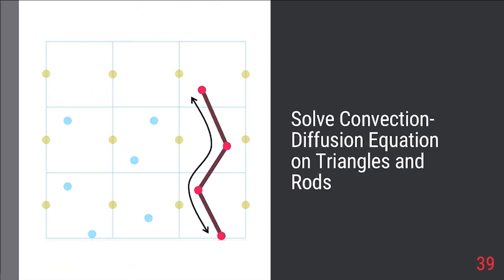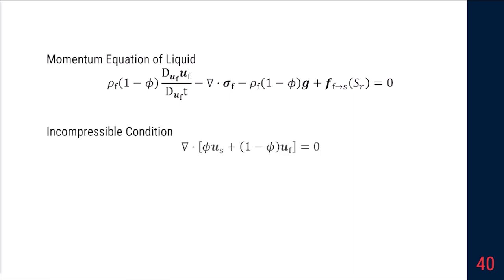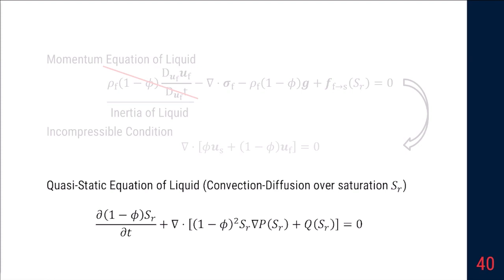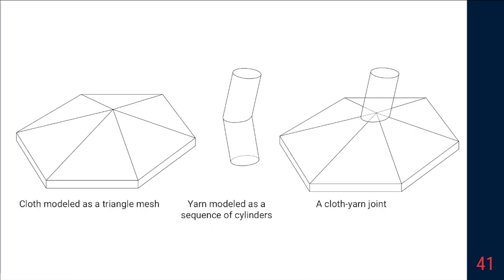For the porous flow, we need to solve a convection-diffusion equation on mesh or rods. If we take our momentum equation of liquid and incompressible condition from the mixture theory, ignoring the inertia of liquid since we assume the liquid inside the cloth or yarn is creeping flow, and substitute the momentum into the incompressible condition, we'll get a quasi-static equation of liquid, which is just a convection-diffusion equation over the saturation field Sr. In other words, we can simply solve this equation to evolve the saturation field over time on the cloth or yarn manifold.